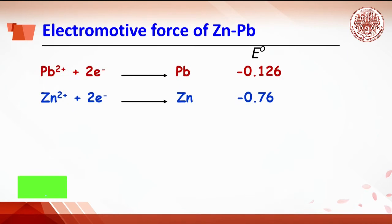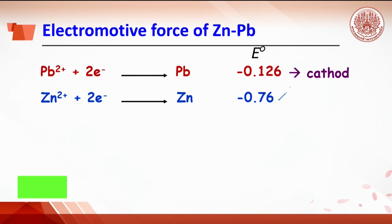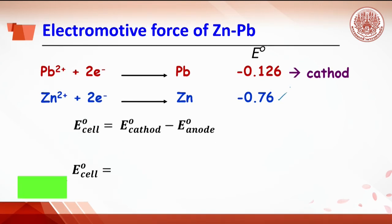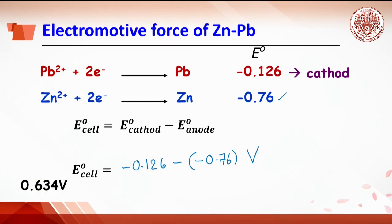For the zinc-lead cell, from the standard reduction potential it can be concluded that the lead half cell is the cathode and zinc is the anode. Substituting into the equation gives: minus 0.126 minus (minus 0.76) volts, so the EMF of this cell is 0.634 volts.